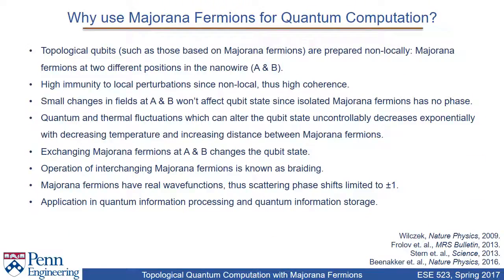Why study Majorana fermions as potential qubits? Topological qubits such as those based on Majorana fermions are prepared non-locally. As seen in the last slide, the two Majorana fermions form at two ends of the wire. Because they are spatially separated, they are highly immune to local perturbations, and thus qubits based on Majorana fermions are predicted to have very high coherence. Any small changes in fields at endpoints A and B won't affect the qubit state, since the isolated Majorana fermion has no phase — making it immune to local disturbances. Quantum and thermal fluctuations which can alter the qubit state decrease exponentially as temperature is decreased and distance between Majorana fermions is increased.